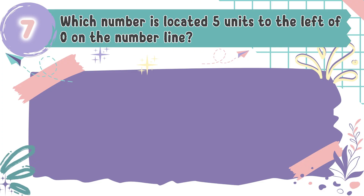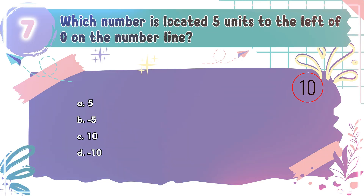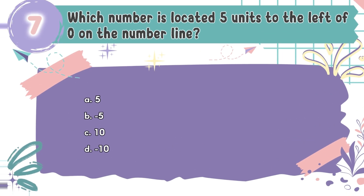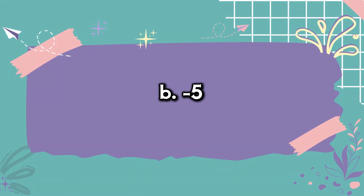Question number 7: Which number is located 5 units to the left of 0 on the number line? The choices are A. 5, B. Negative 5, C. 10, D. Negative 10. The correct answer is B. Negative 5. Moving to the left of 0 on a number line takes you into the negative numbers.